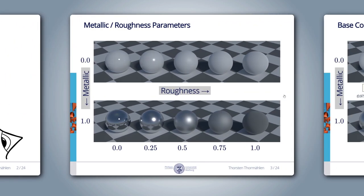In a tutorial presented at SIGGRAPH in 2012, Brent Burley, who works for Walt Disney Animation Studios, presented a user-friendly interface to the microfacet BRDF. In this interface, all parameters are in the interval from 0 to 1. This approach is the current de facto industry standard to represent a material and is known as the metallic roughness workflow. As the name suggests, the two most important parameters are the metallic and the roughness parameters.